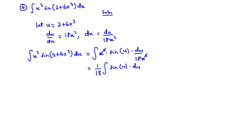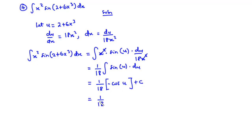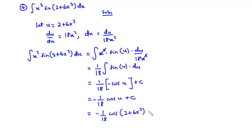When you integrate sin u you get negative cos u, so we have 1/18 times negative cos u plus C. Multiplying through gives negative 1/18 times cos u plus C. Don't forget that u equals 2 plus 6x cubed, therefore we have negative 1/18 times cos(2 plus 6x cubed) plus C.